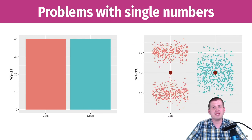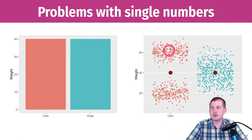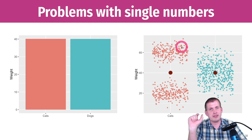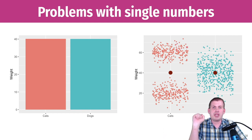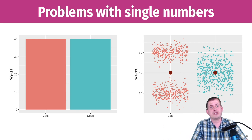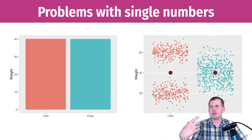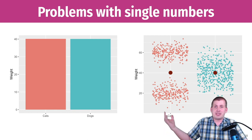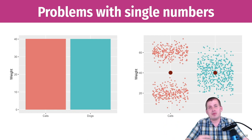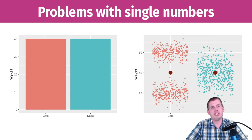Those single numbers are masking the whole distribution of weights for both cats and dogs. When you have a single variable, you rarely want to collapse it down to a single number, because you have to choose which one — the average, the median, different percentiles, the standard deviation. Which one is best? Who knows. So why not just show a range of numbers and try to communicate that uncertainty better?